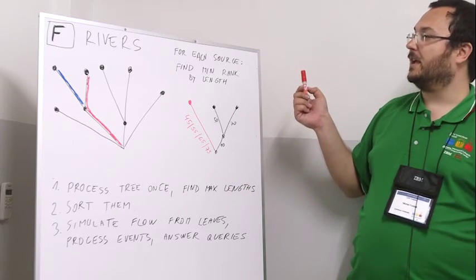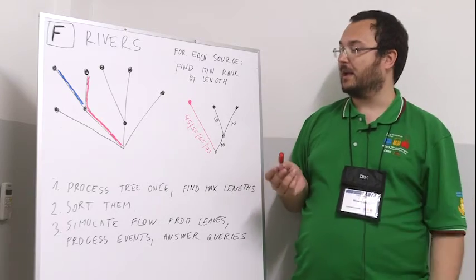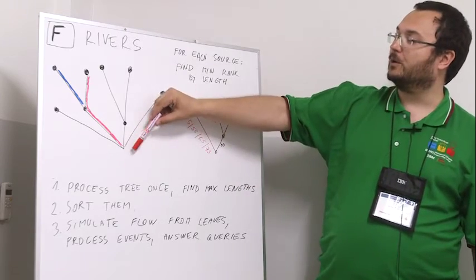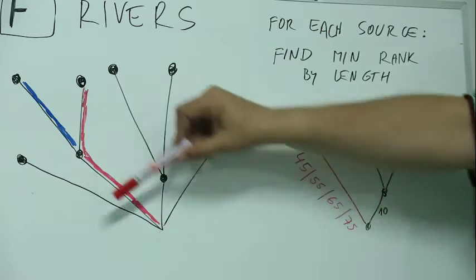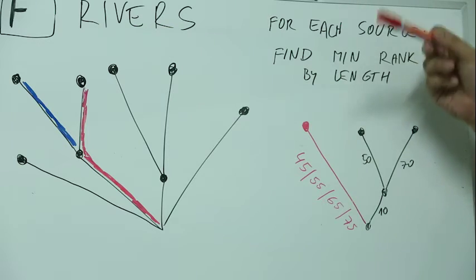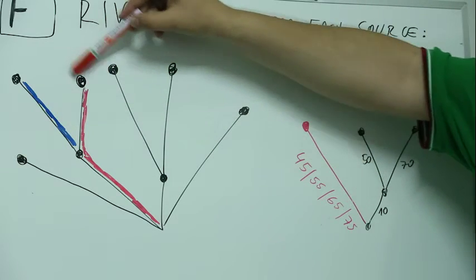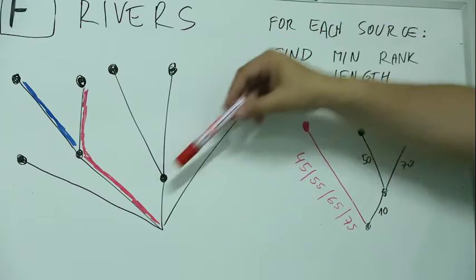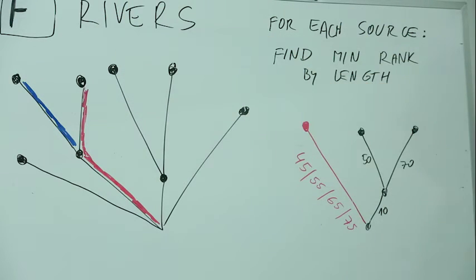So instead we need to be somehow more clever and the intended solution looks approximately like this. First of all what we do is we start at the root of the tree, we do one depth first search and we compute the maximum lengths of all rivers. So now for each leaf we know the maximum length. Now we will take all of these lengths, we will sort them, and we will consider these to be events, so these are events of a type of a query.